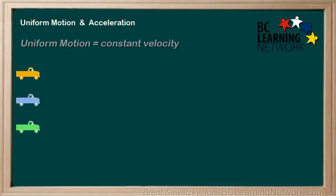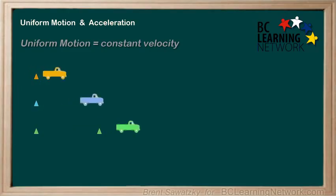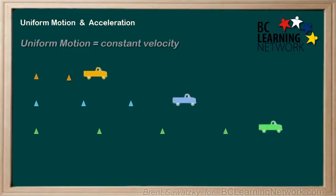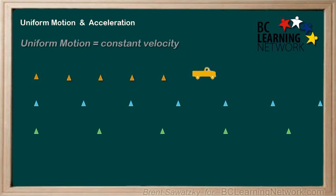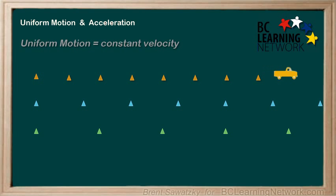Consider the following: what if we had three trucks which drove along dropping a pylon out of the back every second? We have an orange truck dropping off orange pylons, a blue truck dropping the blue pylons, and of course a green truck dropping its green pylons. What can we say about the motion of these trucks by looking at these pylons?